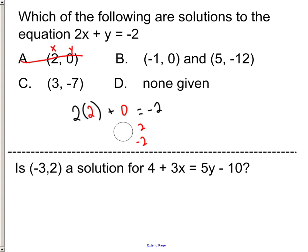And now we can just test (-1,0). So negative 1 was the x and 0 is the y. So that's 2(-1) plus 0 equals negative 2. Negative 2 plus 0 equals negative 2. So this one's correct, but it says and, so we got to go see if (5,-12) is going to work also.